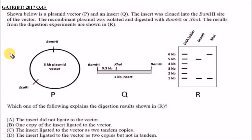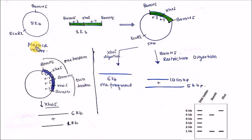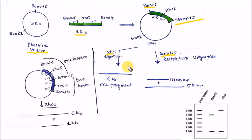This question came in the GATE Biotechnology 2017 paper. A plasmid vector and insert are given, and you can ligate the insert into the plasmid. After digestion with BamHI you get two fragments because two BamHI sites are present in the circular plasmid. After digestion with XhoI you should get one fragment because only one site is present. The result shows 5 kb and 1 kb for BamHI — that's fine — but for XhoI you get a 6 kb fragment, and there is also an unexpected 1 kb fragment.